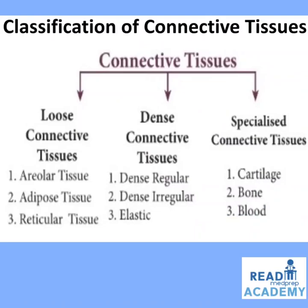The classification of Connective Tissues includes Loose Connective Tissue, which can be Areolar Tissue, Adipose Tissue, or Reticular Tissue. Dense Connective Tissues can be Dense Regular, Dense Irregular, and Elastic Tissue. The Specialized Connective Tissues can be Cartilage, Bone, or Blood.